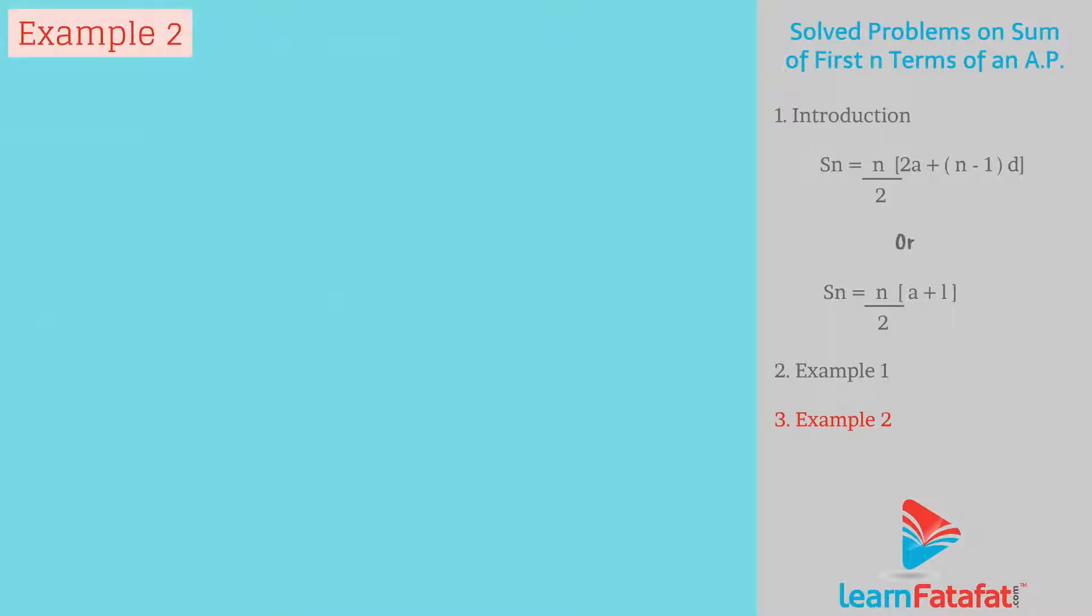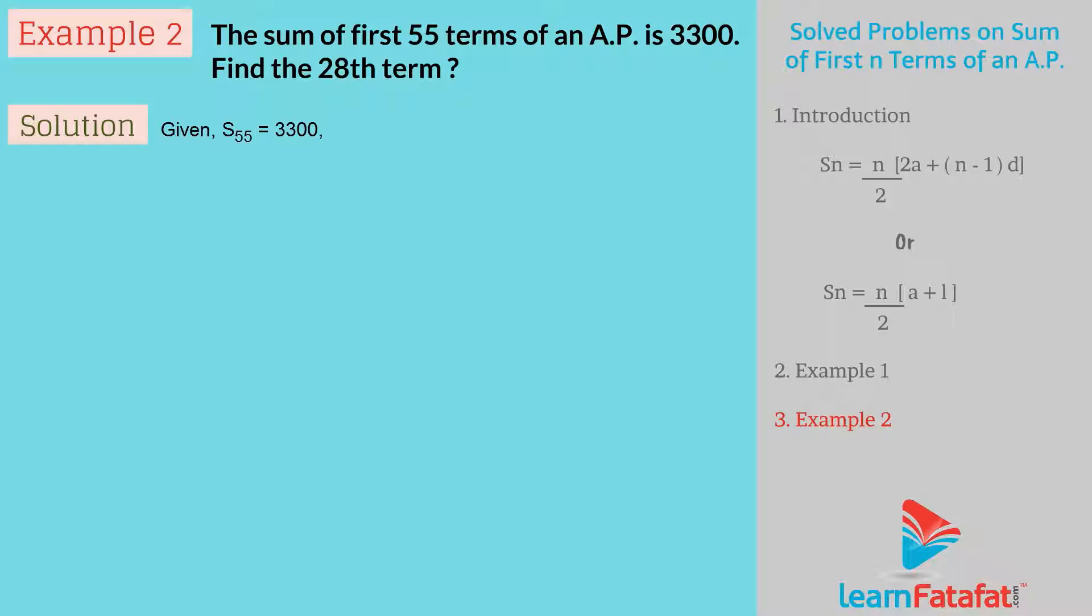Example 2. The sum of first 55 terms of an AP is 3300. Find the 28th term. Solution. Given S55 equals 3300, n equals 55.